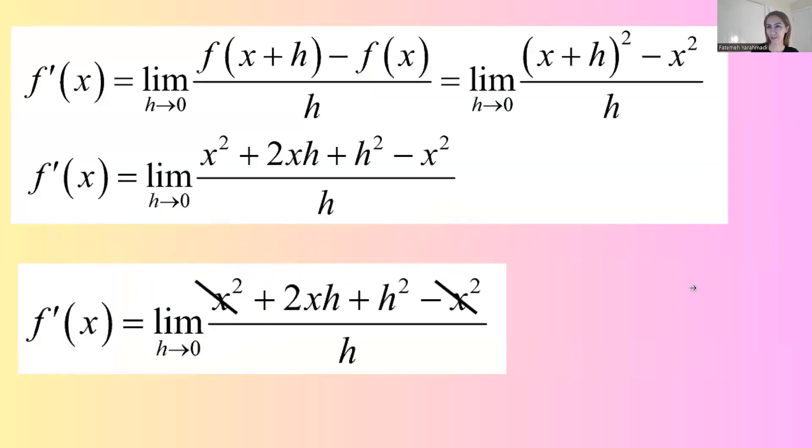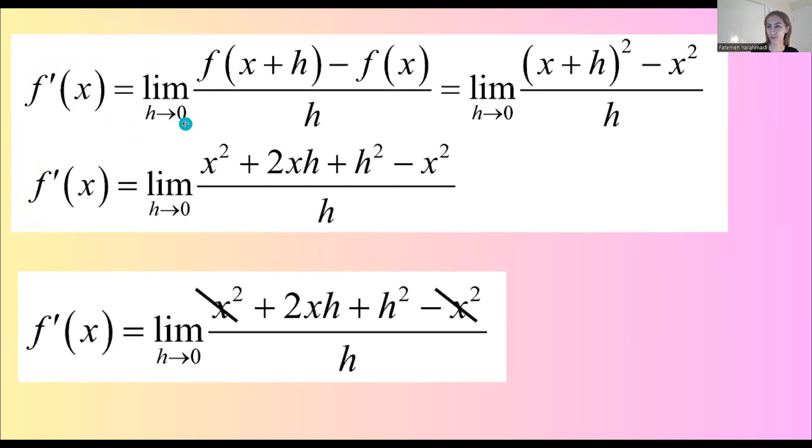Now let's go back to the derivative. As you remember, f prime is the limit of f of x plus h minus f of x divided by h as h goes to 0. And since our function is a quadratic function, on the numerator you have x plus h to the second minus x squared divided by h.